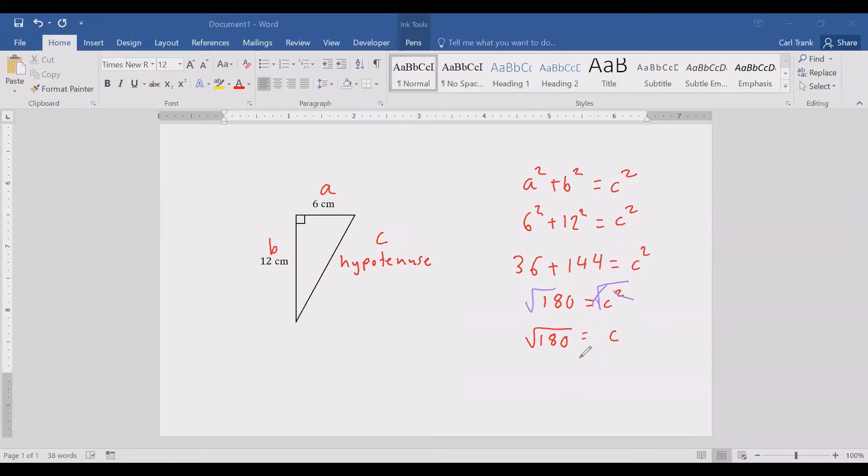But since we want a simplified radical we need to simplify the square root of 180 by making a factor tree. 180 is equal to 18 times 10. 18 is equal to 2 times 9. 9 is equal to 3 times 3. 10 is equal to 2 times 5. We are going to look for pairs or groups of 2 because it is a square root and we have a group of 2 2s. We also have a group of 2 3s.